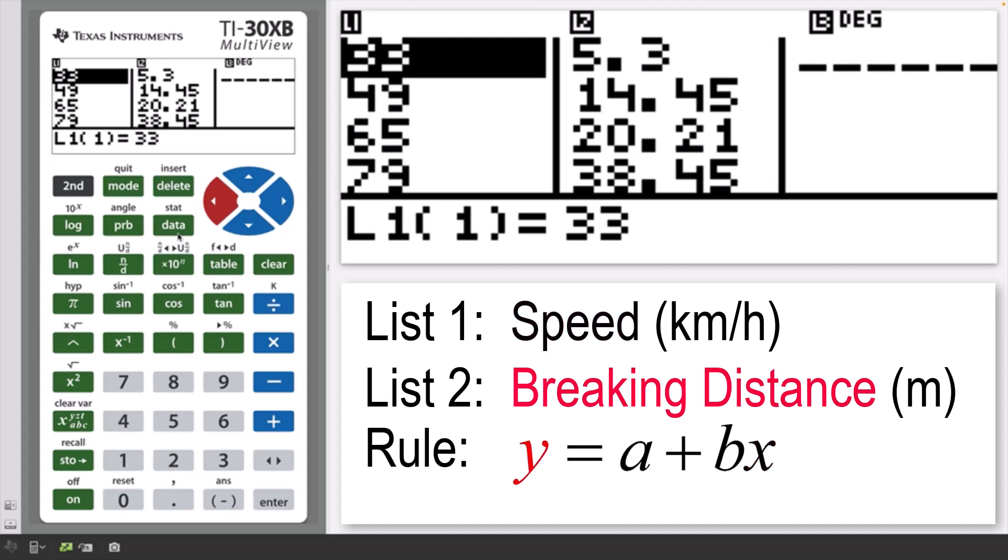Then use this to estimate the braking distance required for a vehicle traveling at 55 kilometers per hour.